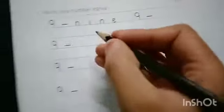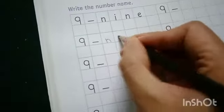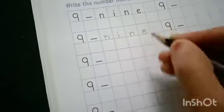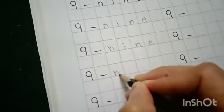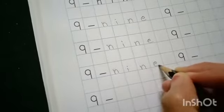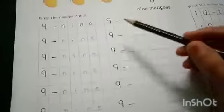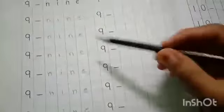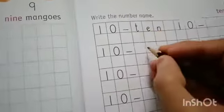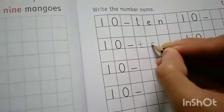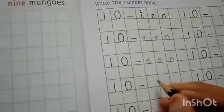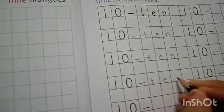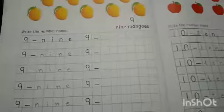Let's write down number 9. N-I-N-E-9, N-I-N-E-9, N-I-N-E-9. Write the spellings very neatly.